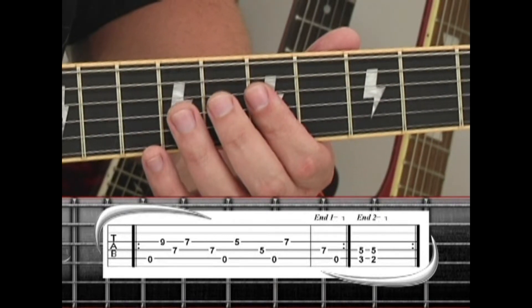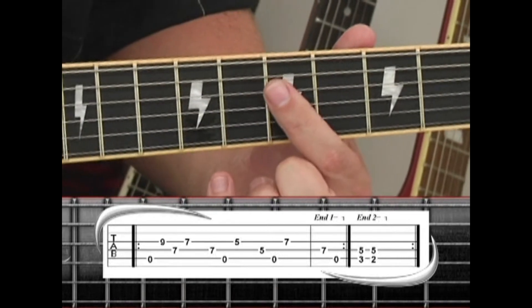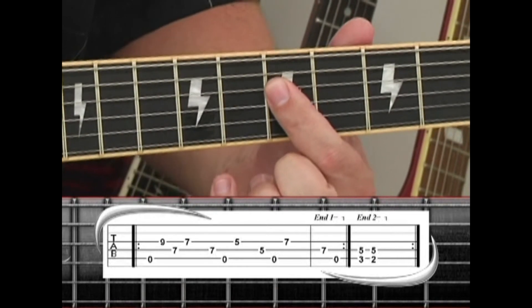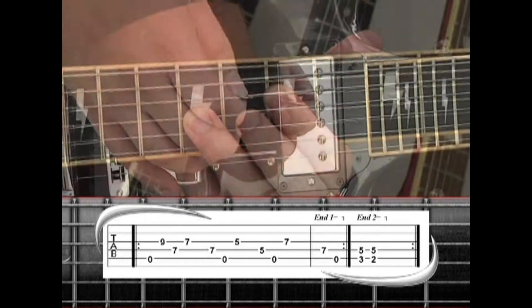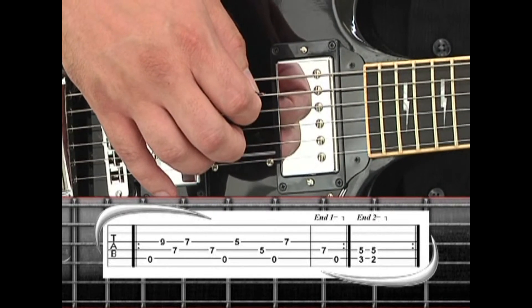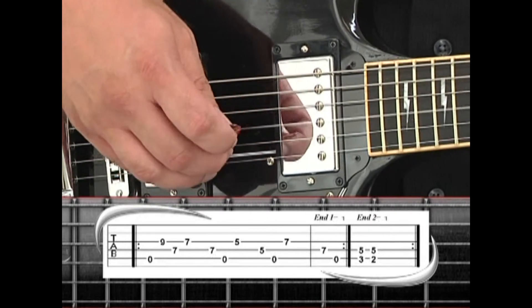Angus Young starts off the song with the main riff. For phrase one, start by barring your index finger on the fourth string seven and third string seven, adding your ring finger to the third string nine. With this chord in place, pick strings five, three, then four.